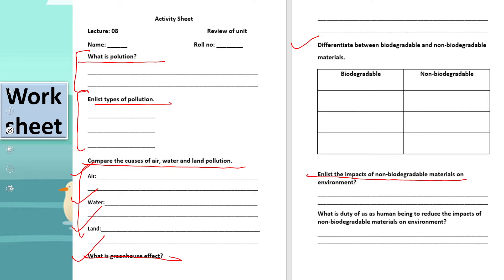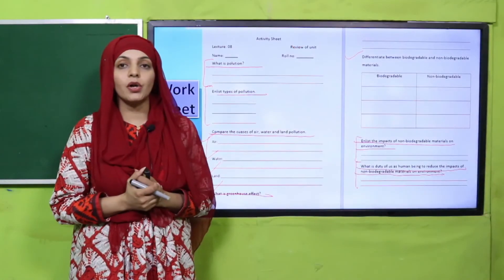Further worksheet questions: What is the greenhouse effect? Differentiate between biodegradable and non-biodegradable materials. List the impacts of non-biodegradable materials on the environment. What is the duty of us as human beings to reduce the impacts of non-biodegradable materials on the environment? Pause the video and complete the worksheet.